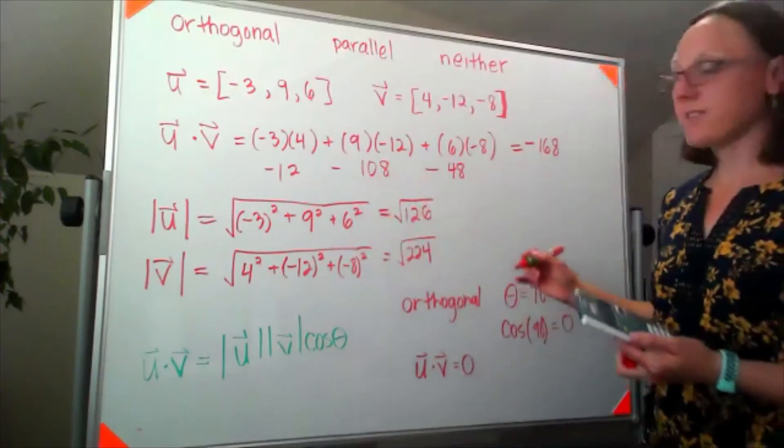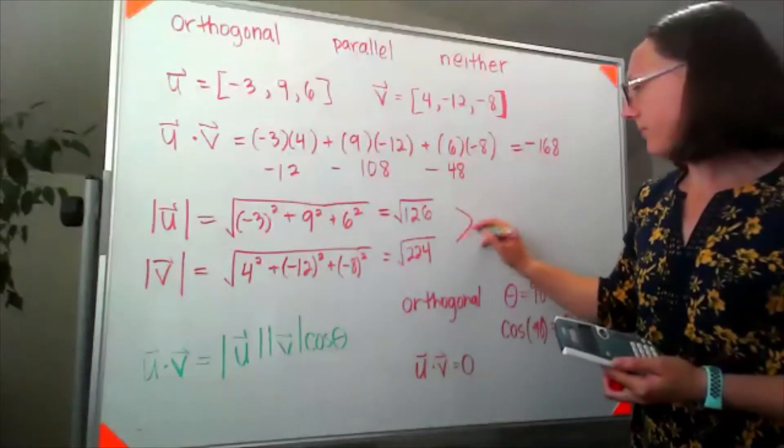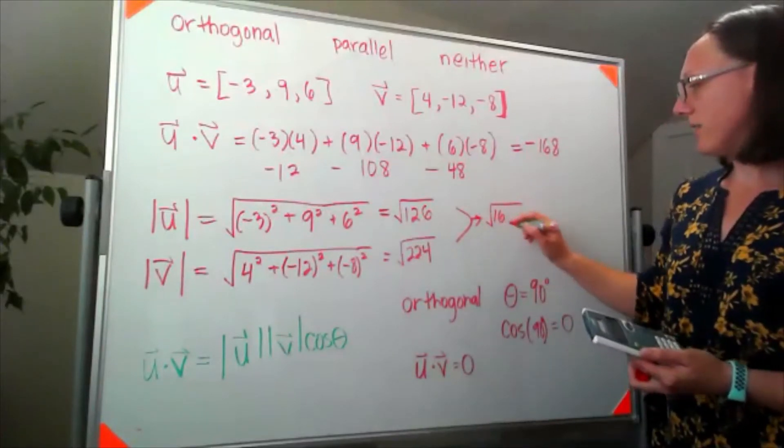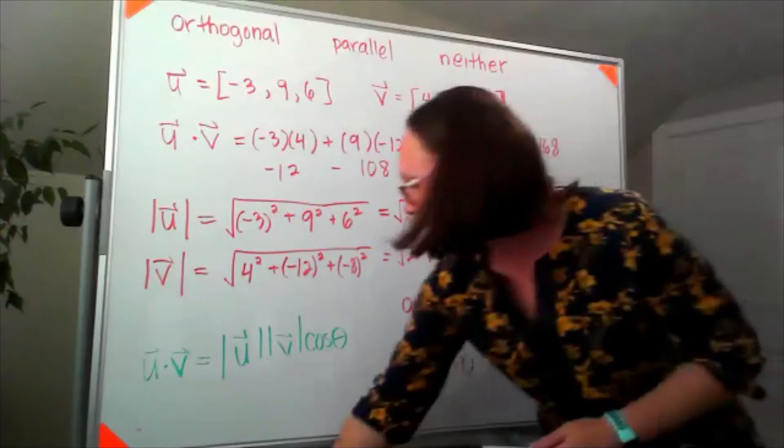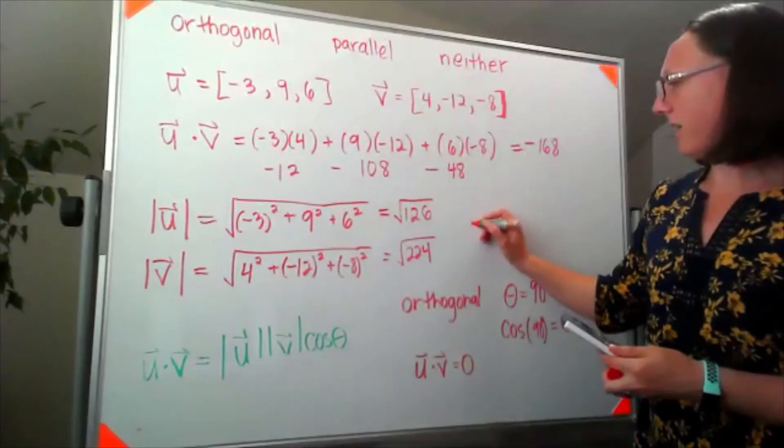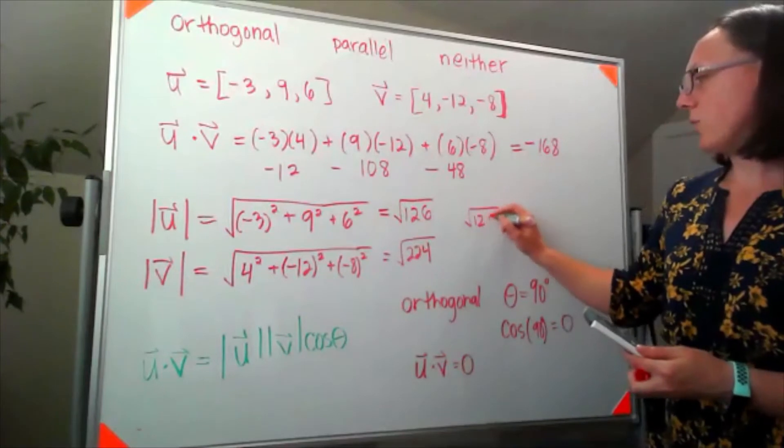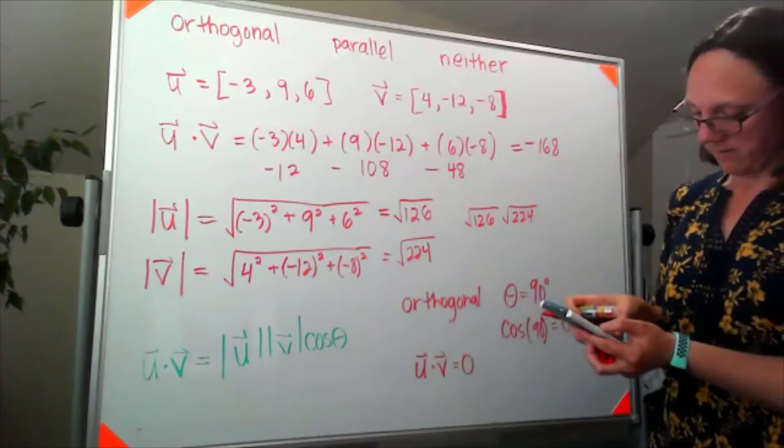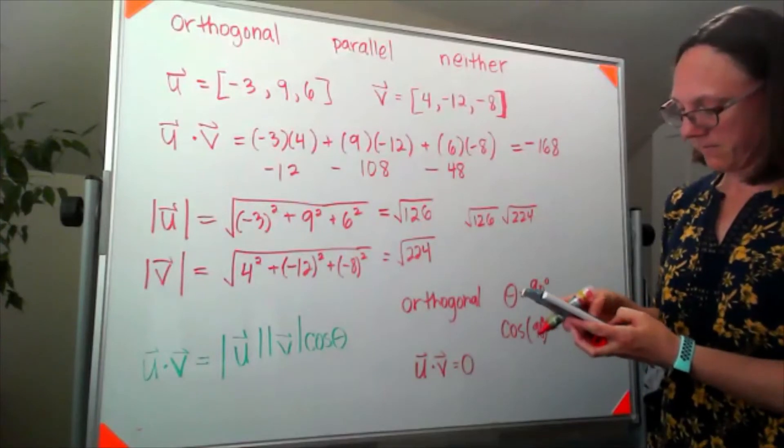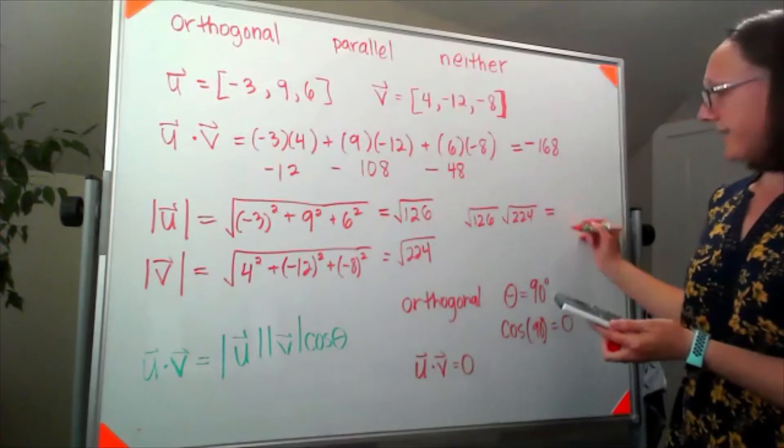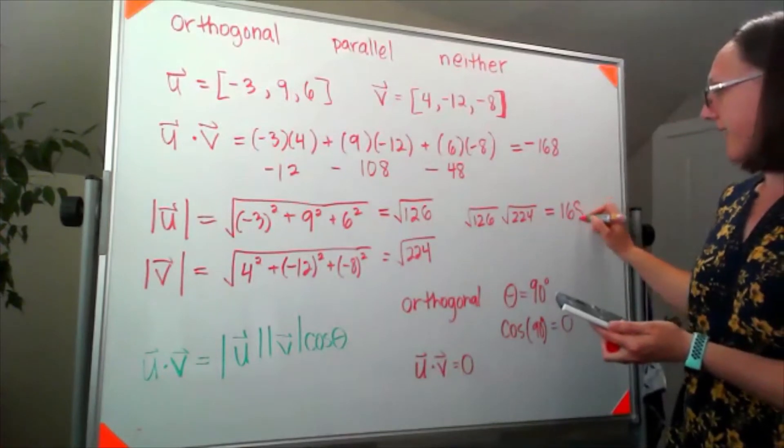So if I multiply these two together, the square root of 120, oops already making mistakes here. So if I multiply those two together then the square root of 126 times the square root of 224. You get 168.